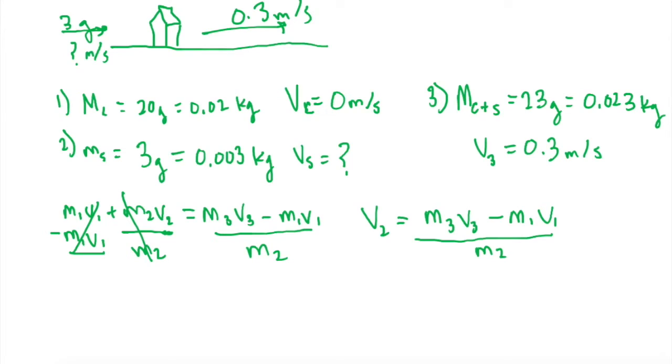Let's plug in the values. V2 equals M3, which is 0.023 kilograms, times its speed of 0.3 meters per second.